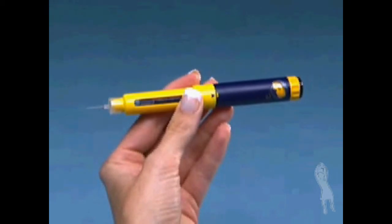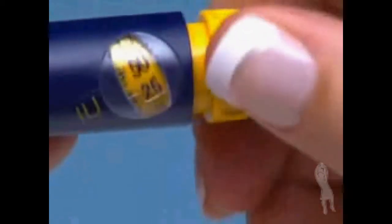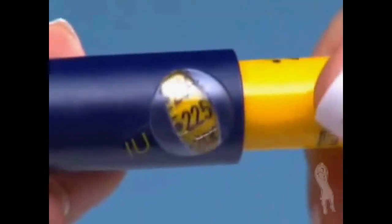For doses of 50 units up to 450 units, turn the dosage knob until the dot beside the correct number on the dosage scale is sitting in the middle of the dosage window.